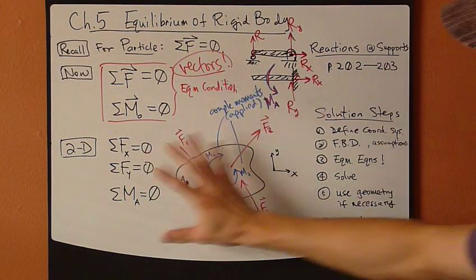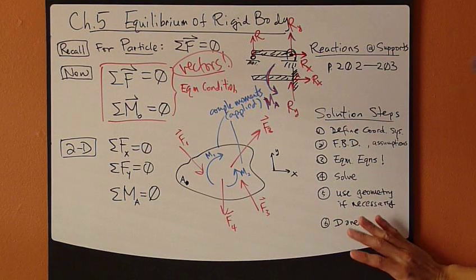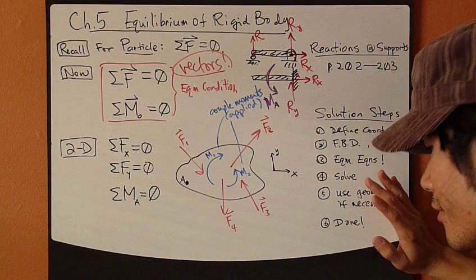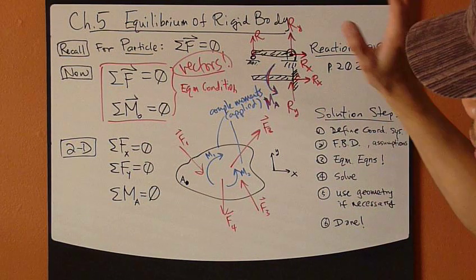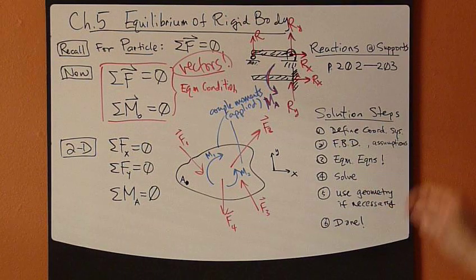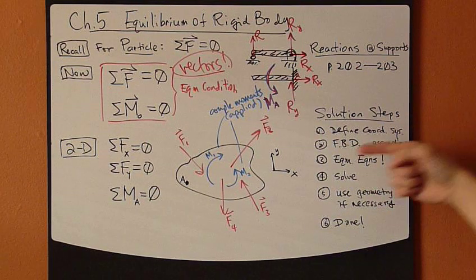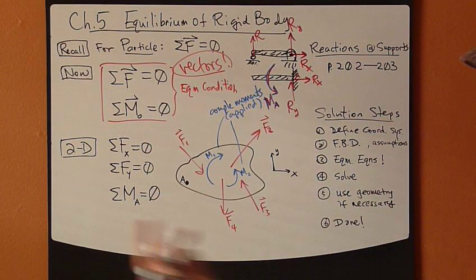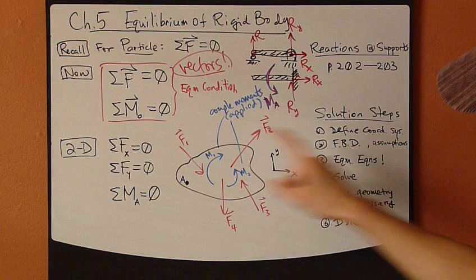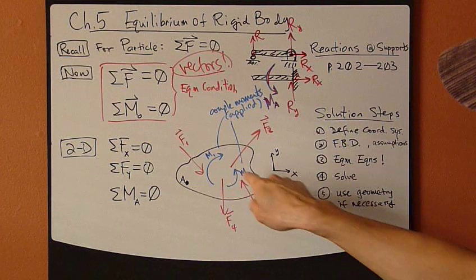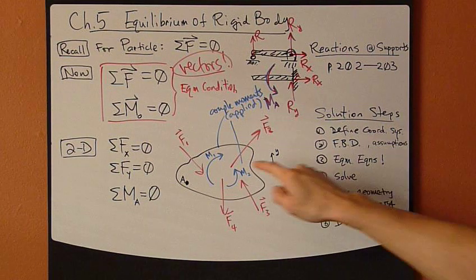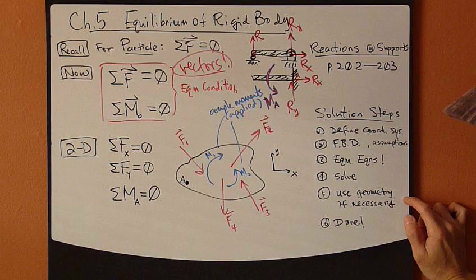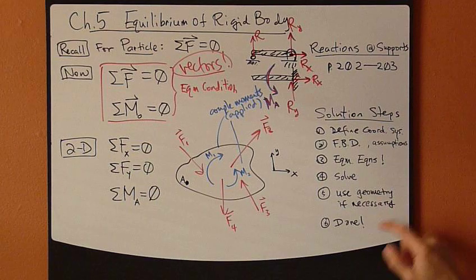With all these in place, here are the solution steps — very logical, identical to how you solve for particles back in Chapter 3. First, define a coordinate system. Then draw a free body diagram — just the rigid body without any attachments, freed up — and draw all the forces and applied couple moments including reactions. Then bring in geometry and trigonometry if necessary, and solve.